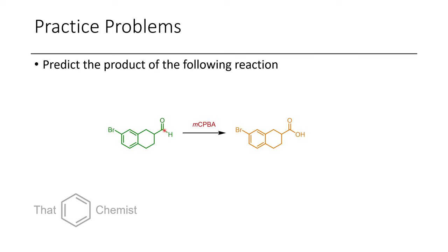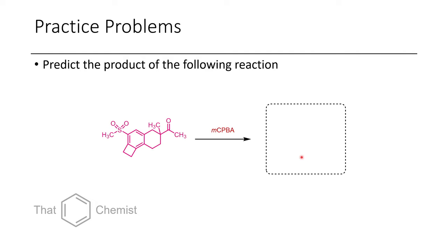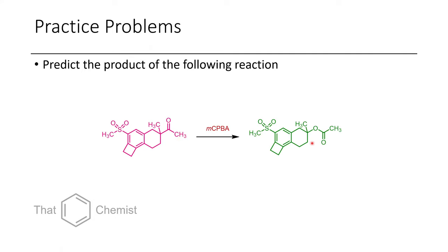This is a nifty trick to keep in your back pocket if you're having trouble making a carboxylic acid. Compared to other methods we talked about, this occurs via a 1,2-shift. In the final example, we have a methyl ketone on one side and a quaternary position on the other. Because a more substituted position has greater migratory aptitude than a methyl, we'll form an ester as an oxygen-carbon bond on the more substituted part of the molecule.